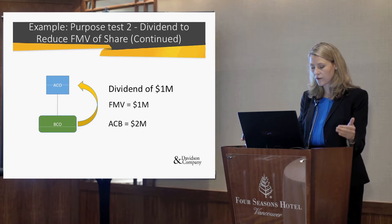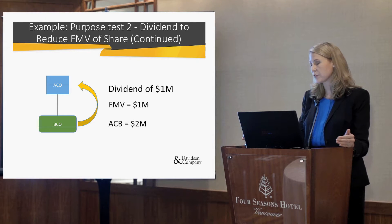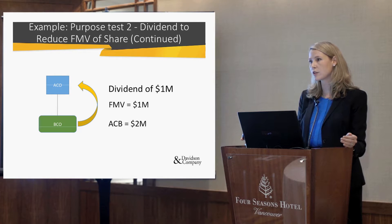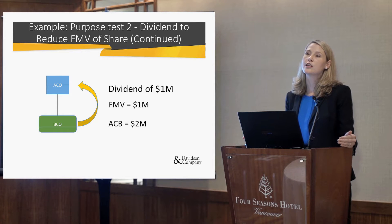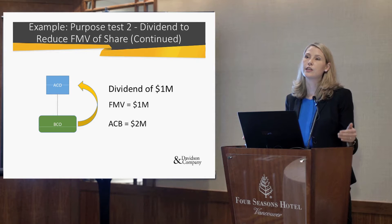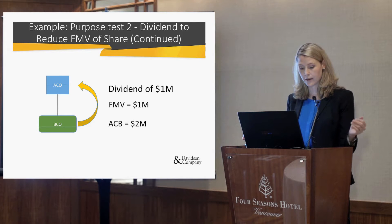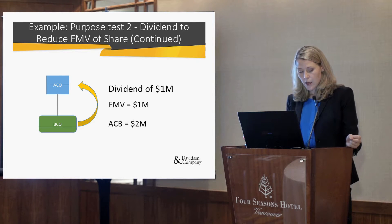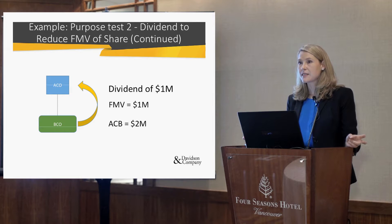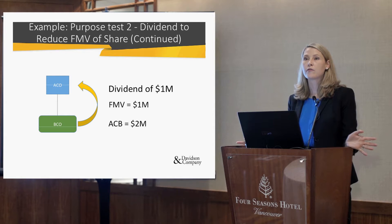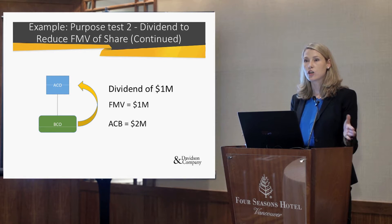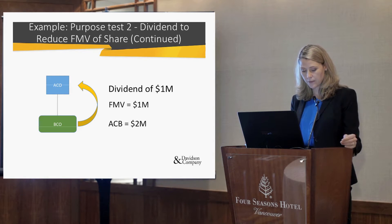You probably could have gotten out of the old 55(2) rules because you didn't do this to reduce a capital gain. But purpose test number two would apply because you have reduced the fair market value of the shares of the company.